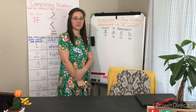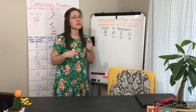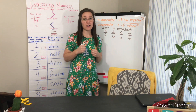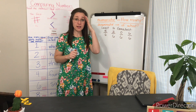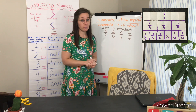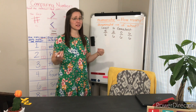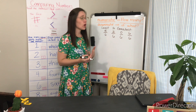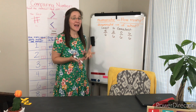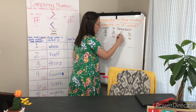One last problem. Our last problem says, put these fractions in order from least to greatest. It gives us the fractions five-sixths, two-sixths, zero-sixths, and six-sixths. Hopefully your wheels are already turning because you know what those fractions really mean. Let's use the logic we've talked about today. Every one of these fractions are sixths, so the only thing that's changed is how many sixths we have. Which one shows the least amount of sixths? Zero. Zero-sixths goes first.